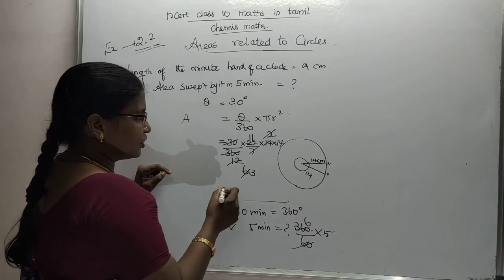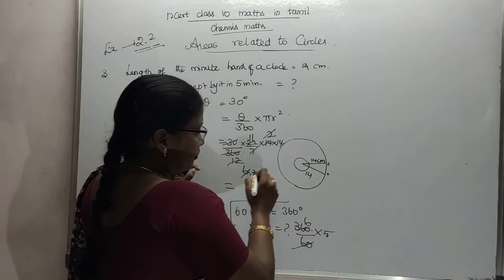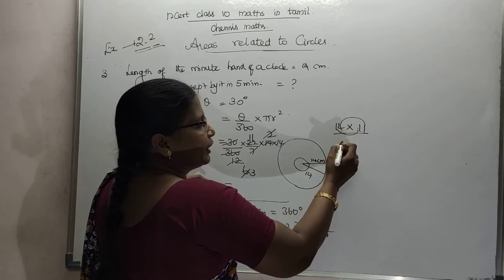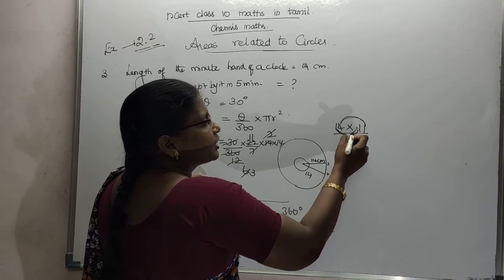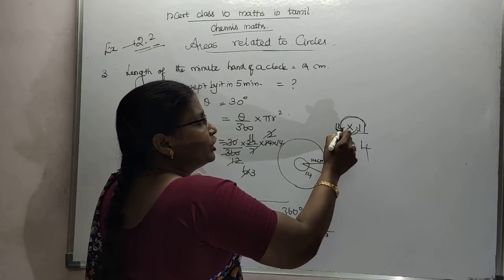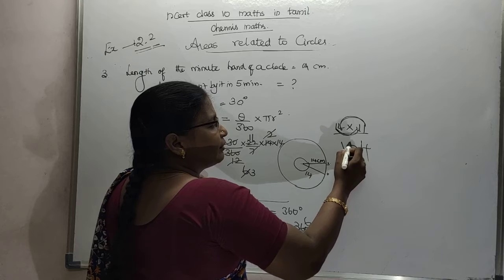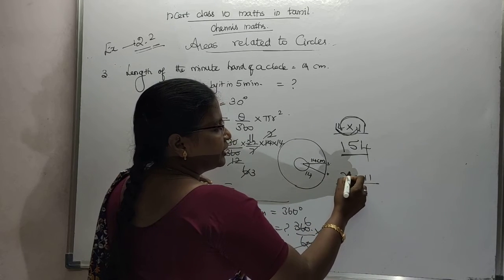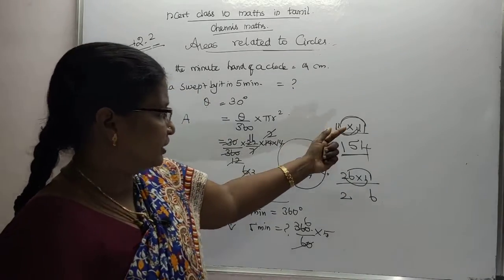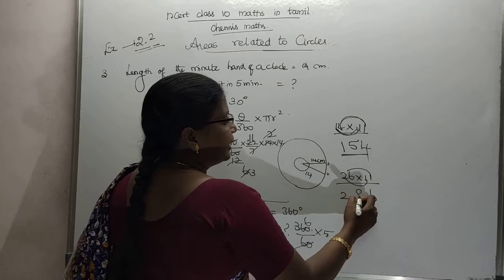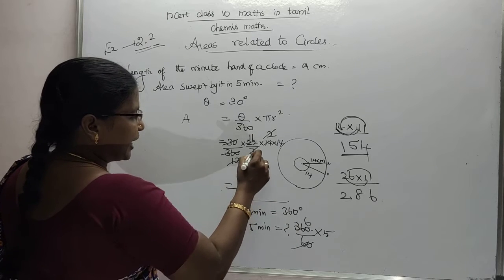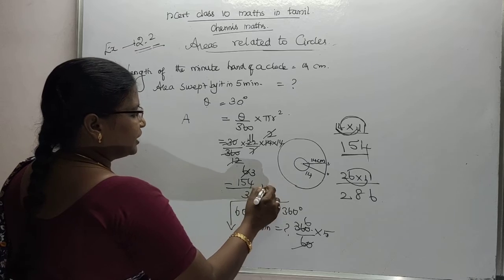Now to get multiplied, 14 times 11 is 154. If you multiply 11, you need to multiply this and this. First add: 10s place, units place, 4 plus 1 is 5. 26 into 11: 6 into 1 is 6, 2 into 1 is 2. Add 4 plus 1, 6 plus 2 add equals 8. Then 286. 154 by 3, that is 154 by 3 cm².